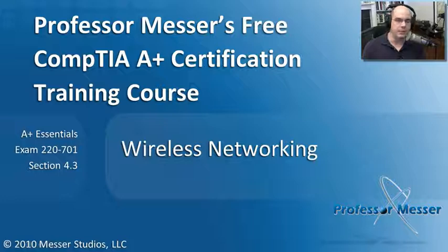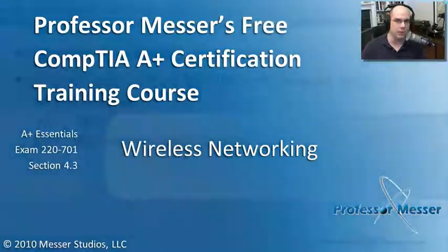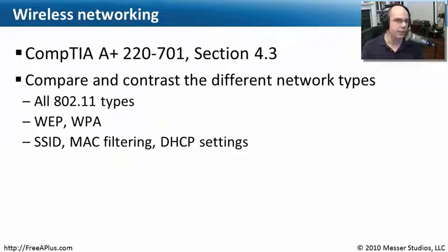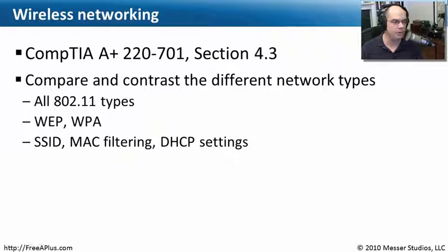Welcome to this module of Professor Messer's free CompTIA A-plus certification training course. This module is on wireless networking. I'm James Messer. In this module, we're going to discuss the requirements from our CompTIA exam 220-701, section 4.3, where we need to compare and contrast the different network types — everything wireless. We're going to go through 802.11, talk about some encryption configurations, and lastly, some settings and configurations you can do to help configure and protect your wireless access points.